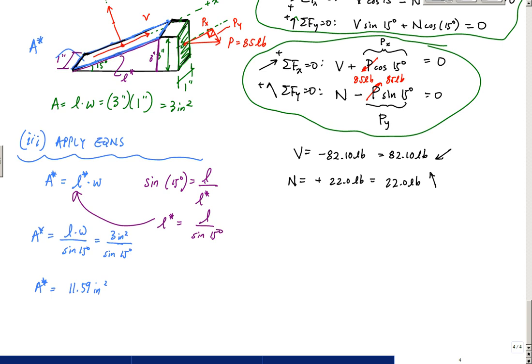And just to finish it all out, applying these relationships, the normal stress, sigma N divided by A star is equal to 22 pounds divided by 11.59 inches squared, which is 1.90 PSI, or pounds per square inch, and tau, which is V over A star, was 82.10 pounds divided by 11.59 inches squared is 7.08 PSI. And that is it.